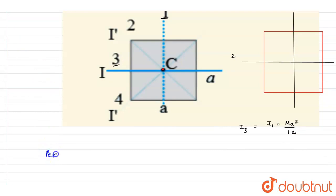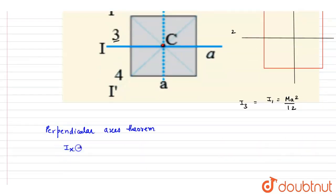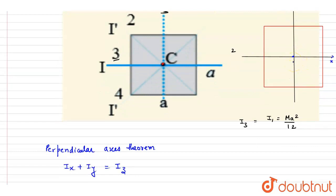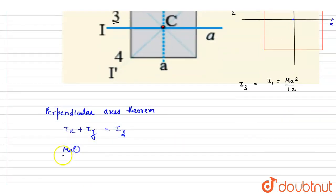Applying the perpendicular axis theorem: the moment of inertia about the x-axis plus the moment of inertia about the y-axis equals the moment of inertia about the z-axis, which is perpendicular to the plane. So ma²/12 plus ma²/12 gives Iz equals ma²/6, which confirms our known result.